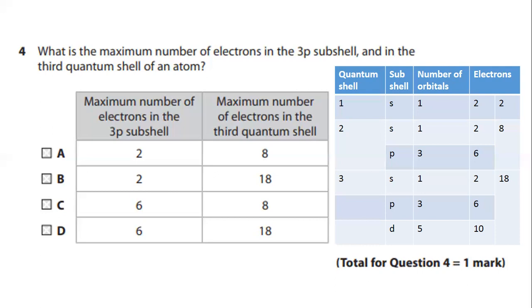Now we are left with C and D. It says maximum number of electrons in 3P as 6 and maximum number of electrons in third quantum shell as 8 and 18. When it says third quantum shell it should include all the electrons that can be occupied maximally by S, P and D orbitals.